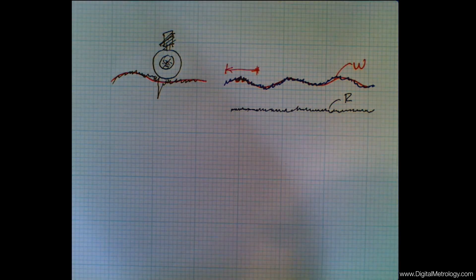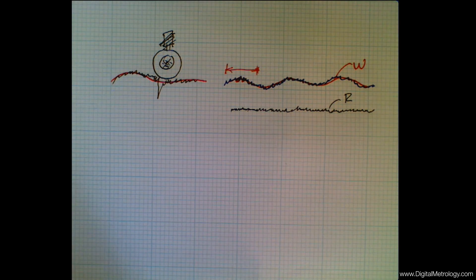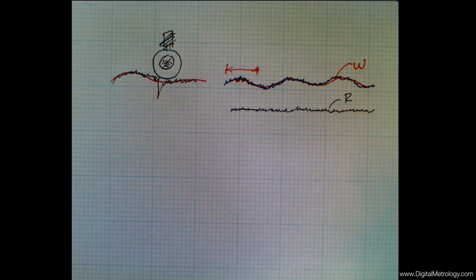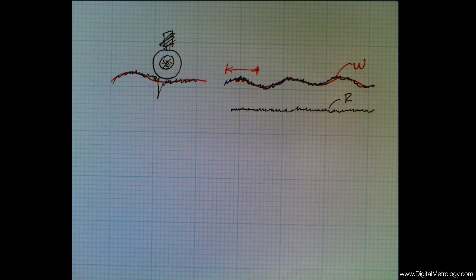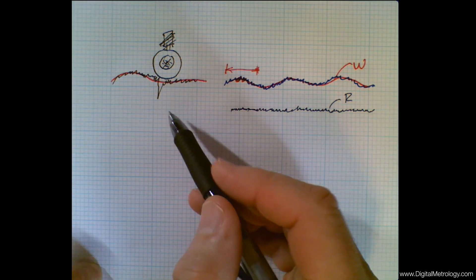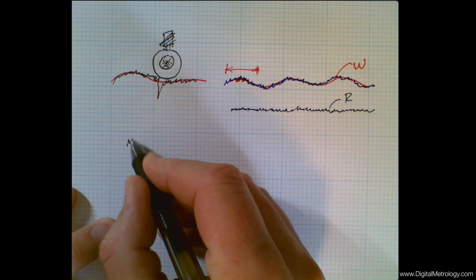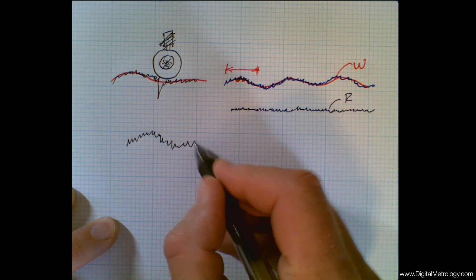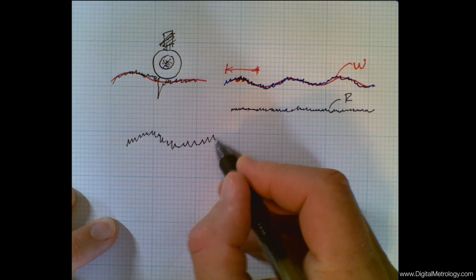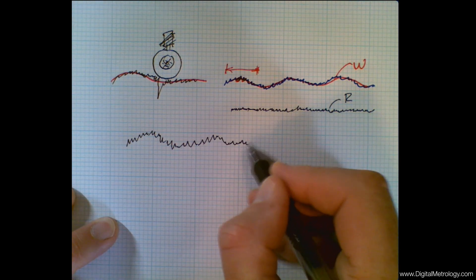Waviness is also important for things like vibration. The car's shock absorber is a mechanical filter, but in the world of surface texture we don't use mechanical filters so much. In fact, our stylus tip is so small we try to get it out of the way and not have any mechanical filtering. Instead, we want to use mathematical filtering in surface texture, which means using some kind of moving average.